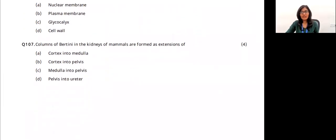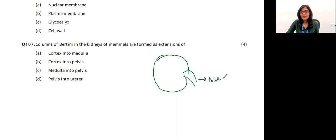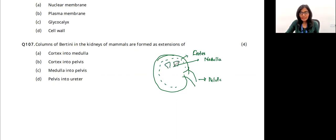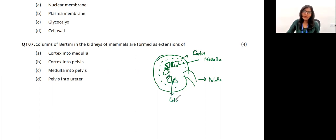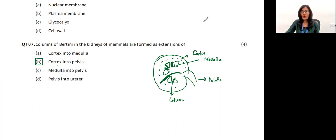Question 12: what is the column of Bertini? In the kidney, the outer region is the cortex and the central portion is the medulla, which contains medullary pyramids. The column of Bertini is the cortical tissue that extends between the medullary pyramids from the cortex toward the pelvis. So the column of Bertini extends from the cortex into the pelvis. The answer is option B.